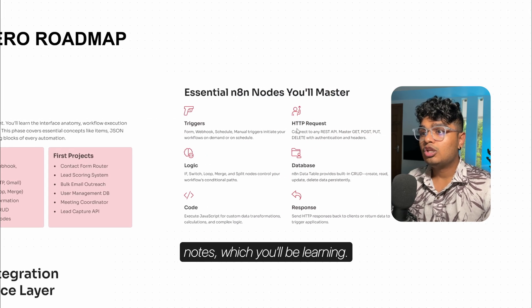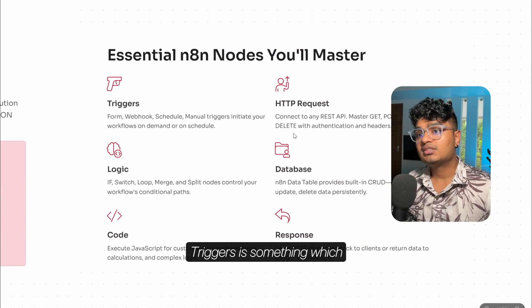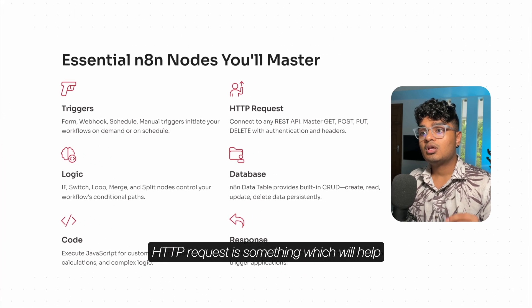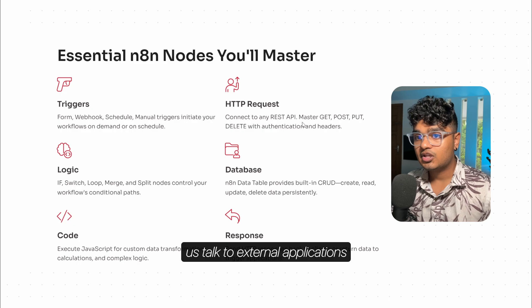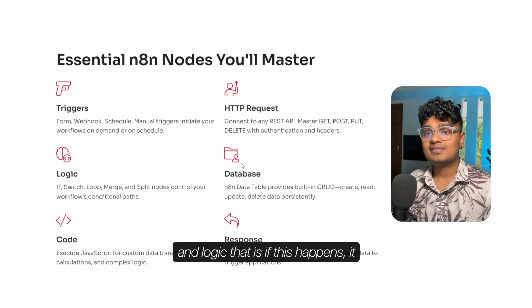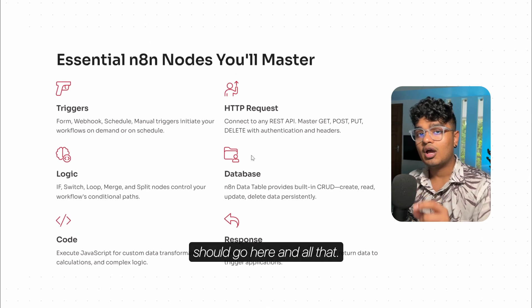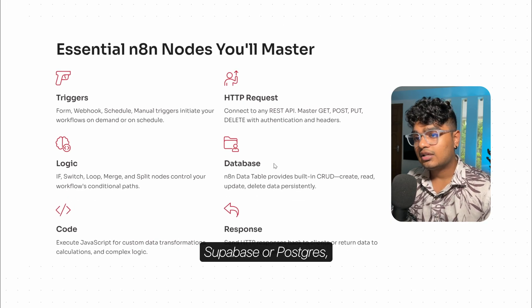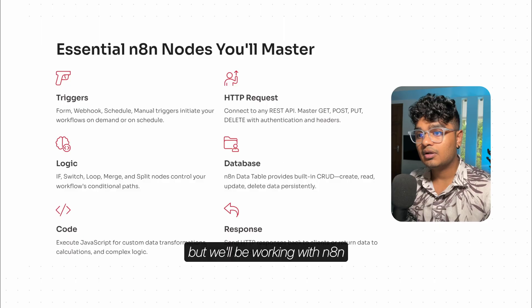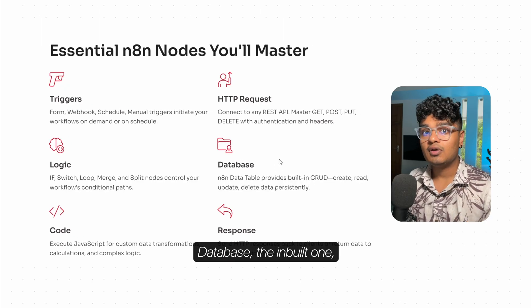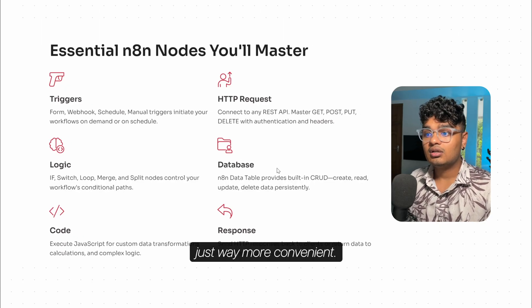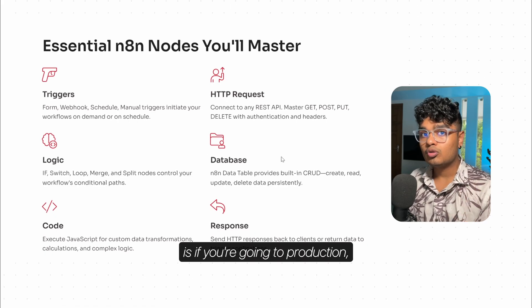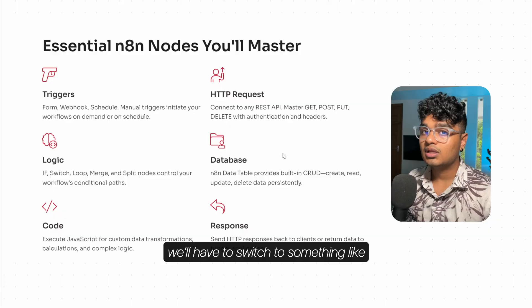There are some key nodes you'll be learning. First, triggers — something which starts an operation. HTTP requests help us talk to external applications. Logic nodes like if/switch handle conditional flow. For databases, there are options like Supabase or Postgres, but we'll mostly work with n8n's built-in database, which is faster and more convenient. However, if you're going to production, we'll switch to something like Supabase for more security.